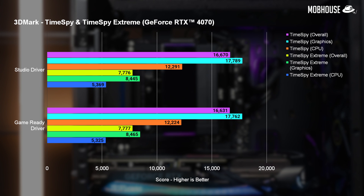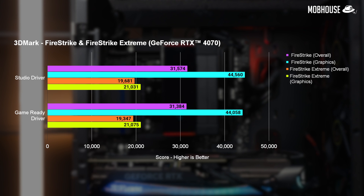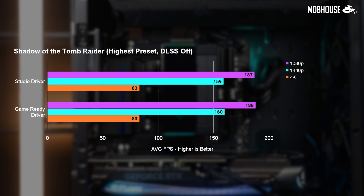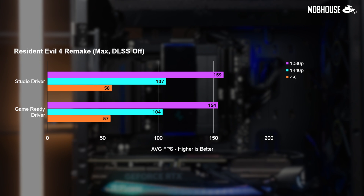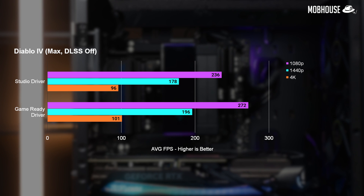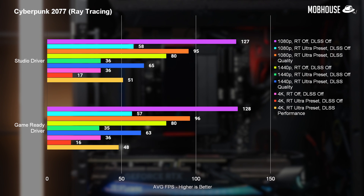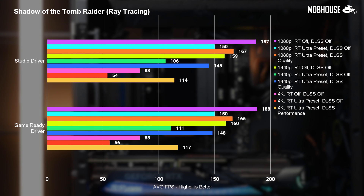How about gaming? 3DMark shows us that the different drivers do not impact the raw performance of the graphics card. Any difference is probably going to be due to optimization. You're not going to see any difference in older games like Shadow of the Tomb Raider or Cyberpunk 2077, or even newer games like Resident Evil 4 Remake. But certain games like Diablo 4 could see up to a 15% or more increase in performance with game ready drivers. We also tested Cyberpunk 2077 and Shadow of the Tomb Raider with RTX on — again, almost zero difference.